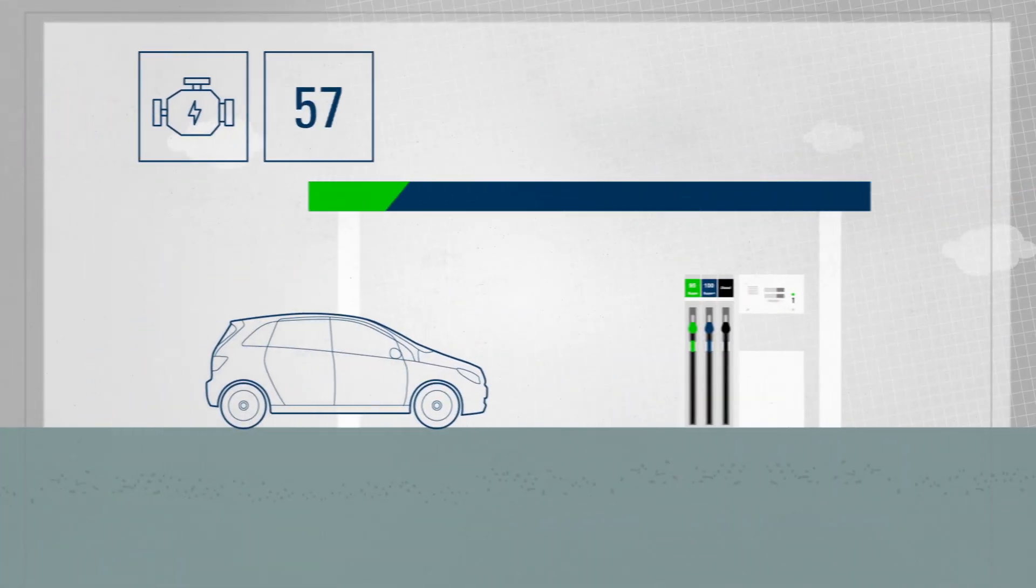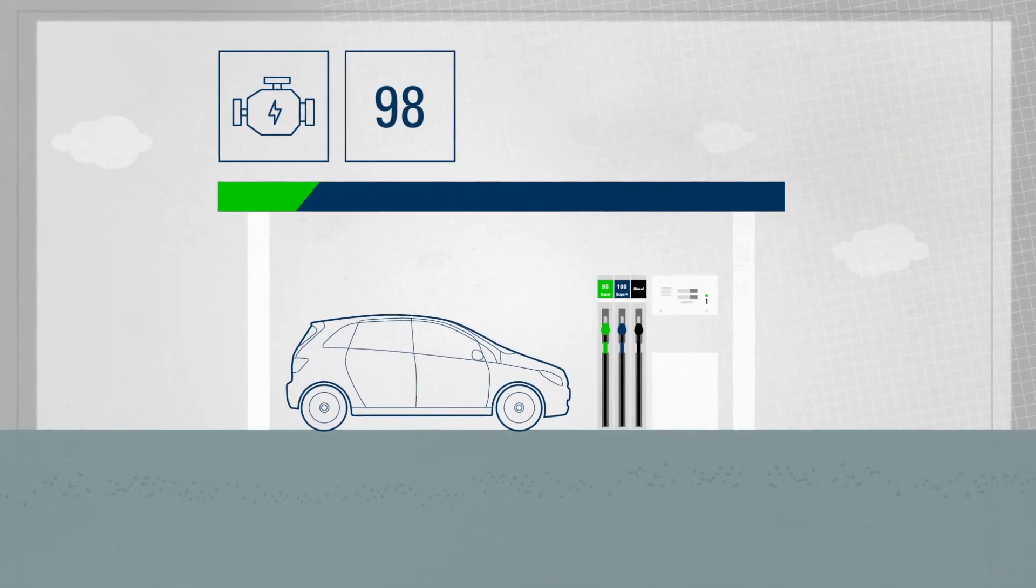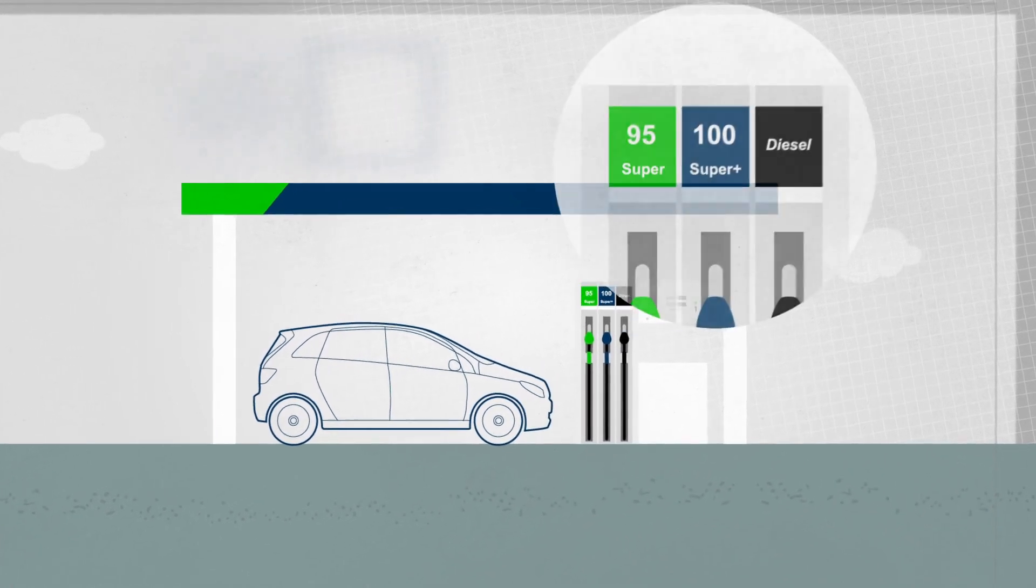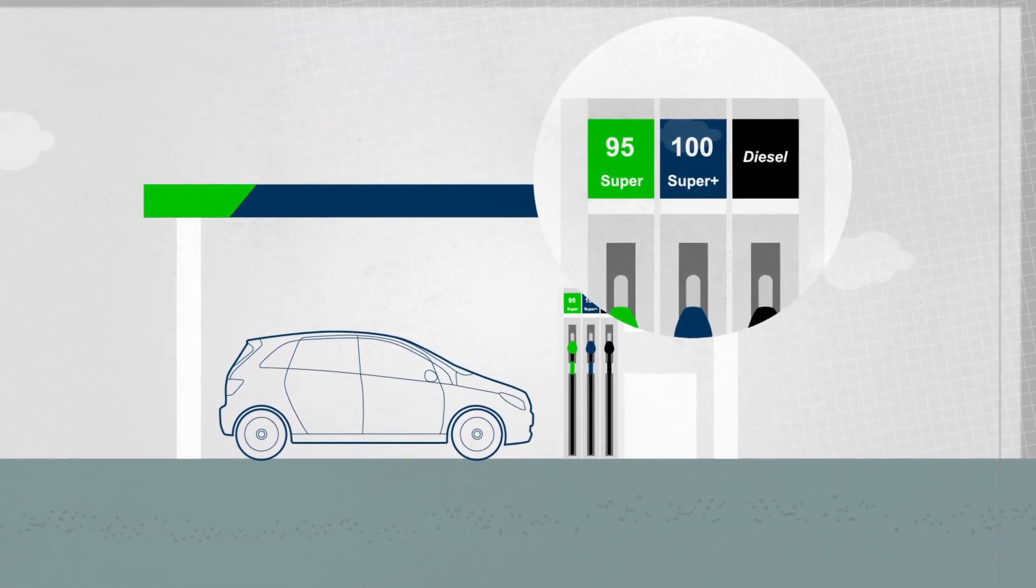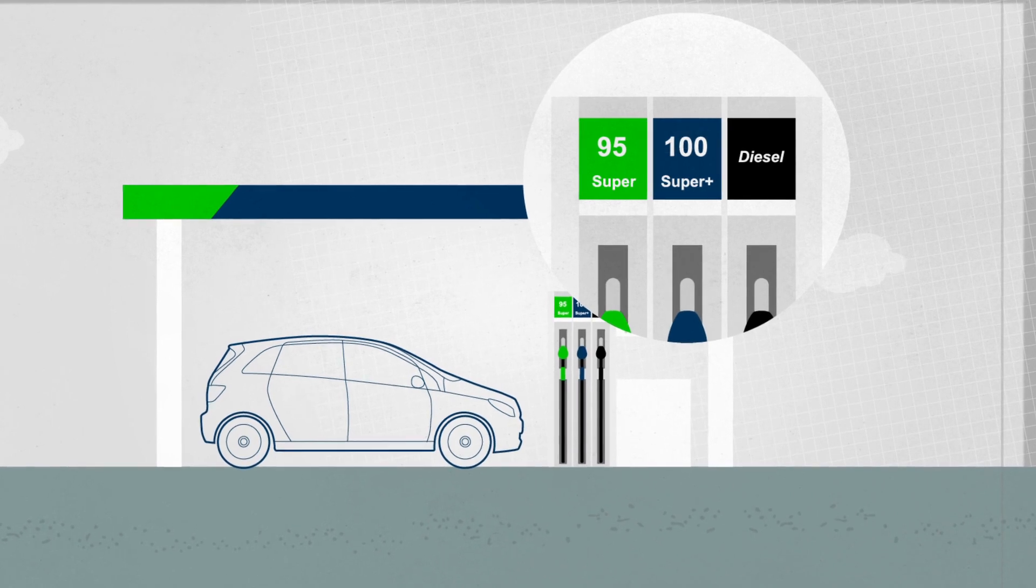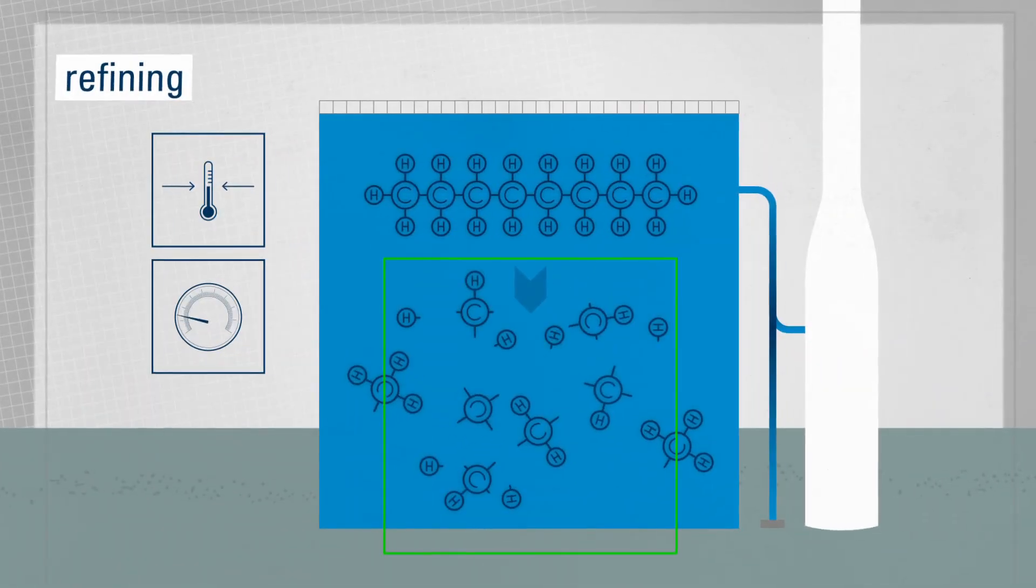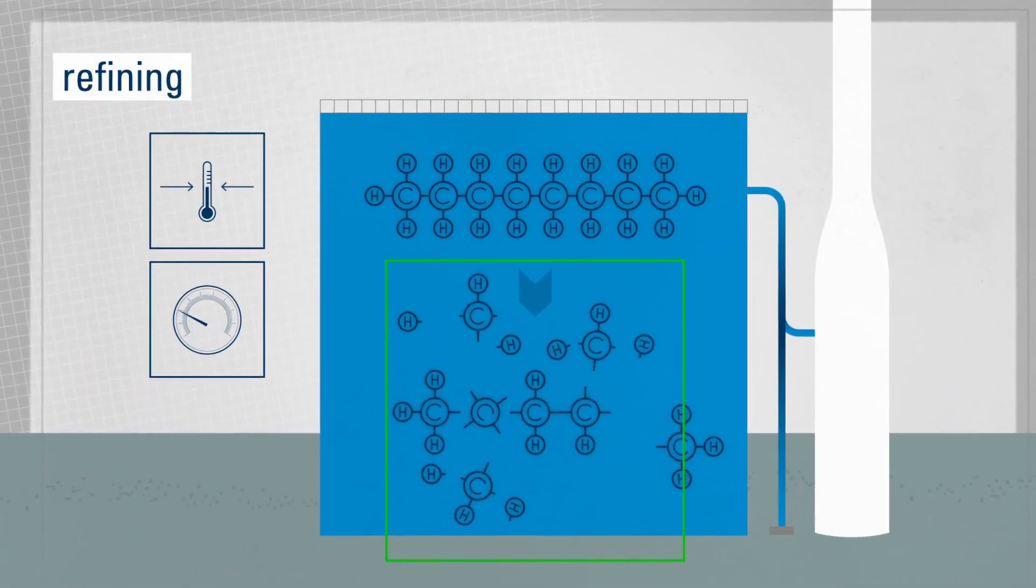Modern engines require fuels with a high octane rating. The higher this rating, the better the combustion quality. The octane level of pure naphtha is too low, but chemical processes change the molecular structure of the gasoline to increase its rating.